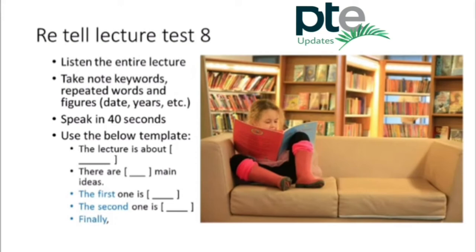Today we're going to talk about children's literature and the role it plays in society. Throughout history, adults have used the power of stories to entertain and amuse their children. But stories are not used merely to entertain youngsters — they have a significant educational purpose. They serve to teach the moral values of their society. In sociological terms, stories are one of the means by which children are socialized.